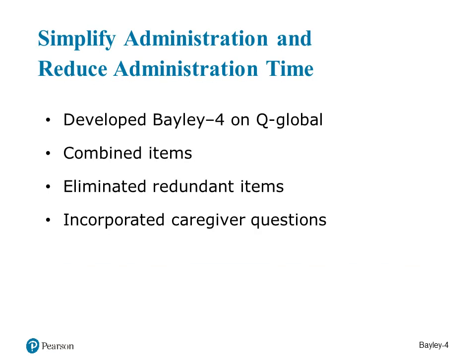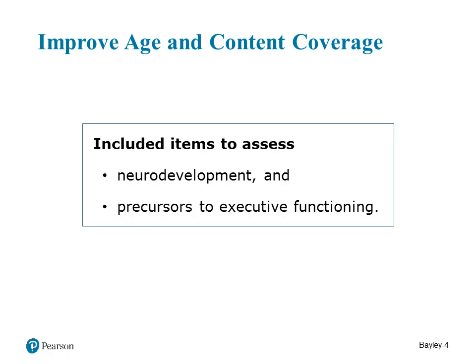Another revision goal was to simplify administration and reduce administration time. To accomplish this, we developed the Bayley IV on Q-Global for digital administration. We also combined a number of items, eliminated redundant items, and included caregiver questions, which we believe will simplify the administration. We also wanted to improve age and content coverage, adding items to assess neurodevelopment and precursors to executive functioning.